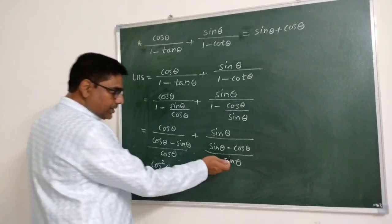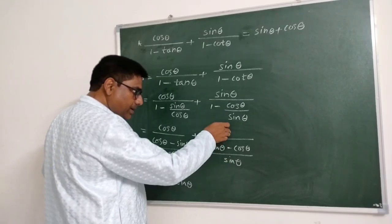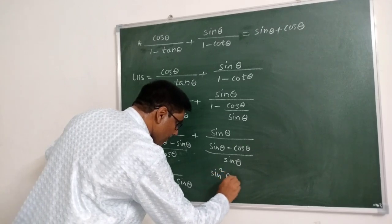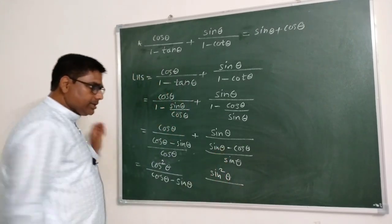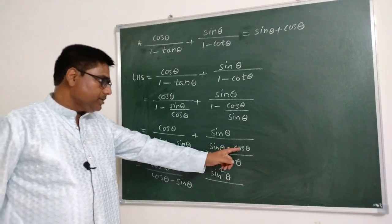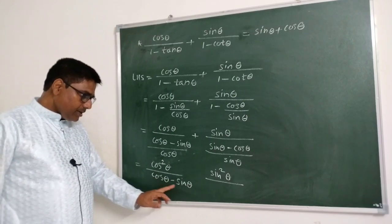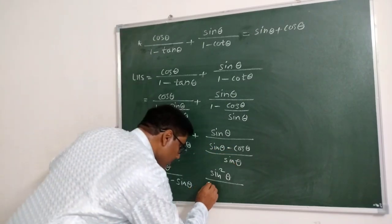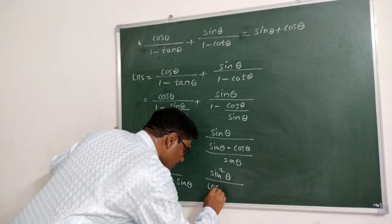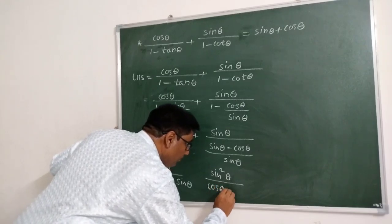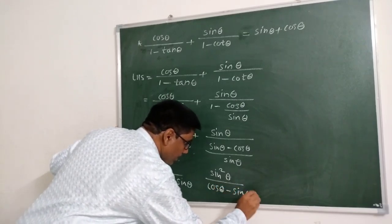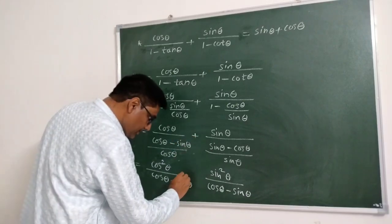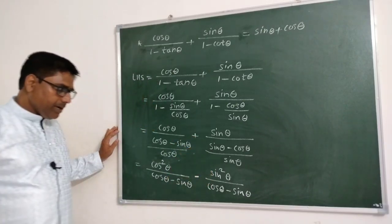Sin θ comes to the numerator giving sin² θ, and in the denominator we get (sin θ minus cos θ). Here we have (cos θ minus sin θ) in the first term. Therefore, let us reverse (sin θ minus cos θ) to (cos θ minus sin θ), and since we reversed it, we must change the sign — so here we take minus.